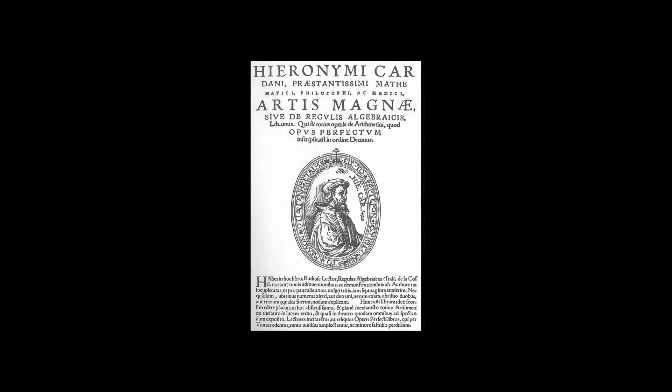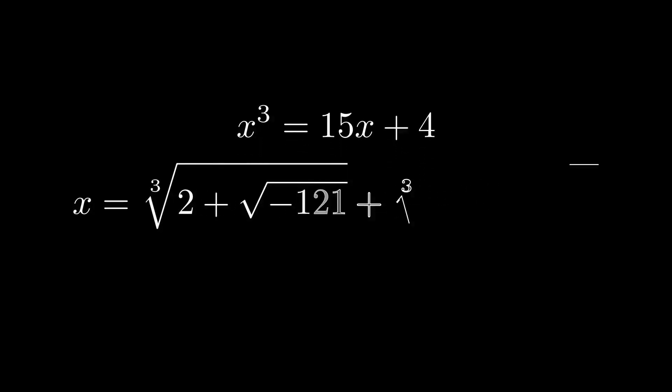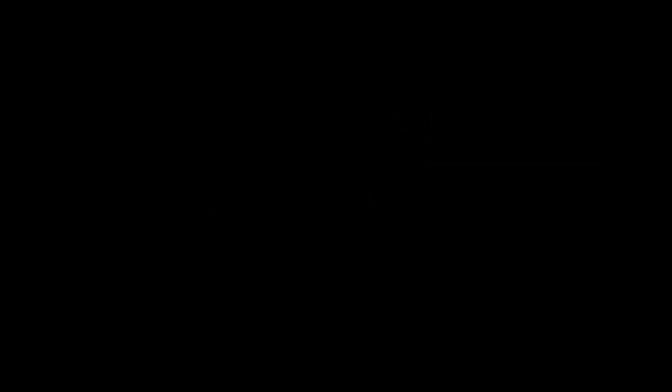In his 1545 book Ars Magna, Cardano solved cubic equations of the form... While solving, he encountered... Cardano dismissed it as sophistic, meaning nonsensical. However, he acknowledged that such expressions could lead to real solutions, hinting at the utility of imaginary numbers.